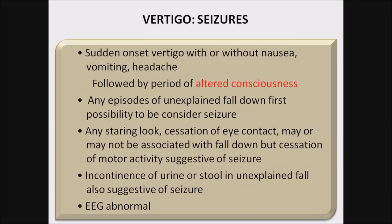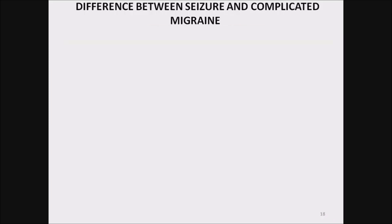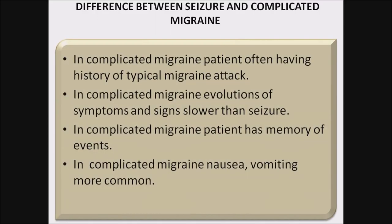EEG is usually abnormal in seizures. Difference between seizures and complicated migraine: in complicated migraine, the patient has a history of typical migraine attacks like headache, photophobia, and phonophobia. Evolution of symptoms is slower in complicated migraine than in seizures. In complicated migraine, the patient has memory of the event, while in seizures the patient has no memory. In complicated migraine, nausea and vomiting are more common.